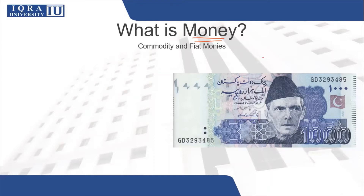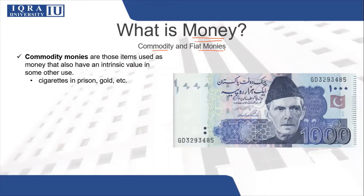In order to understand that, you need to differentiate between commodity and fiat monies. Commodity monies are items that are used as money but they have an intrinsic value in some other use — the good itself has its own value. For example, gold. Gold in itself has its own value and it can also be used to exchange or to purchase something else.